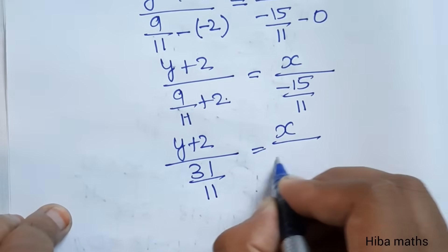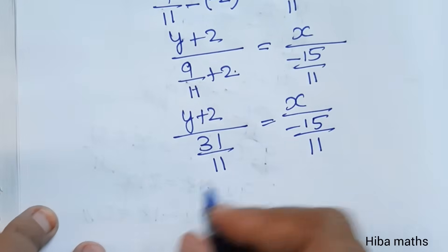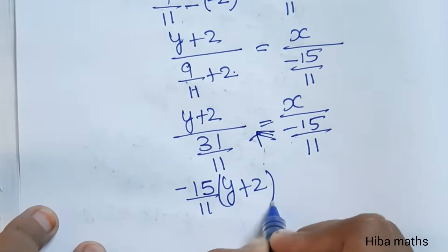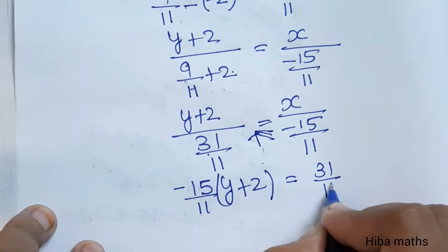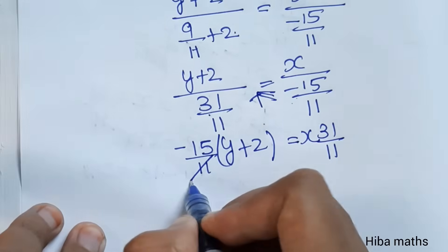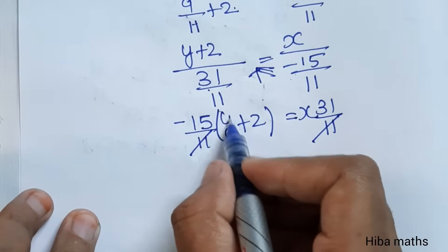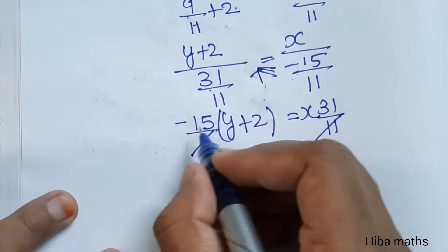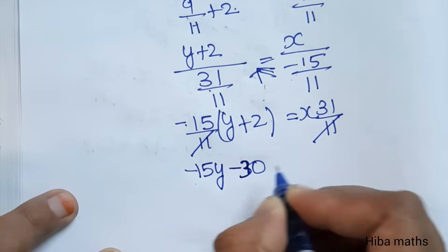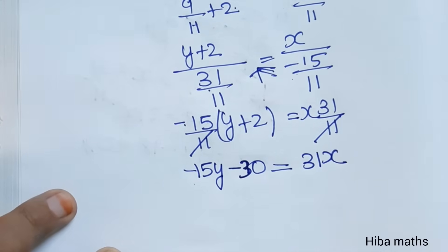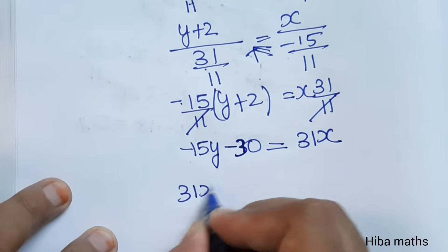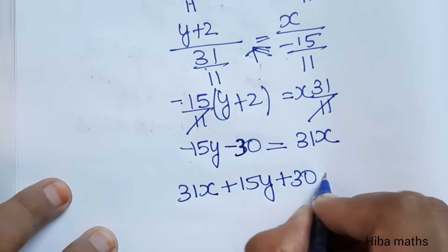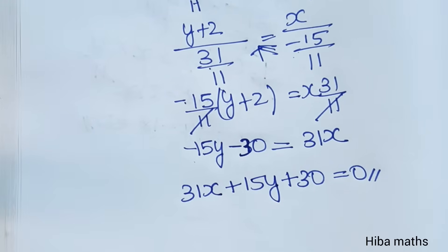Cross multiplying: -15/11 comes here and 31/11 comes here. After cancelling the 11s: -15(y + 2) = 31x. Expanding: -15y - 30 = 31x. Rearranging: 31x - 15y - 30 = 0. This is our required equation. Thank you so much for watching.